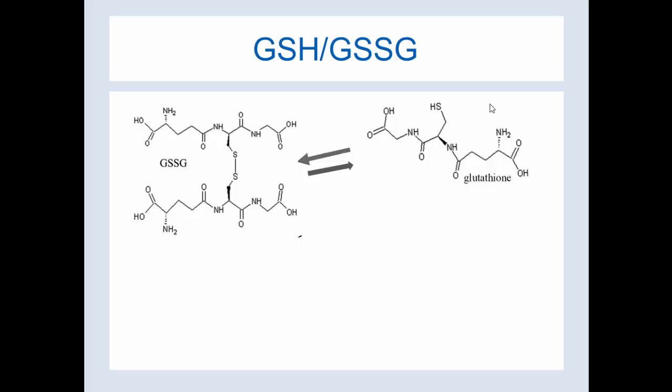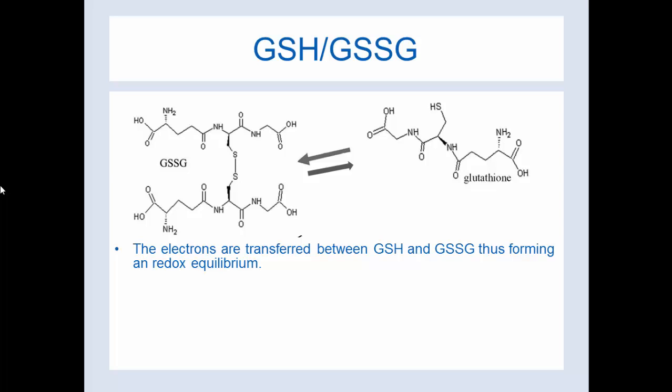Here you have glutathione, the molecule on the right, and there's a double arrow, and you can see on the left-hand part of your screen the molecule called GSSG. What this is is two molecules of glutathione attached by a disulfide bond right here. The electrons are transferred between glutathione and GSSG, and that's what forms the redox equilibrium — going from one molecule of glutathione to the other form, GSSG, which has the disulfide bond.